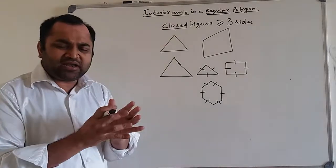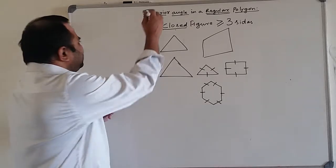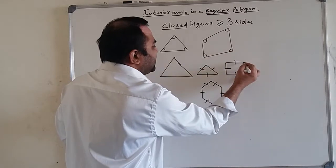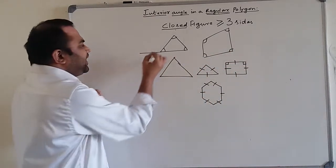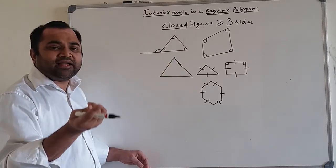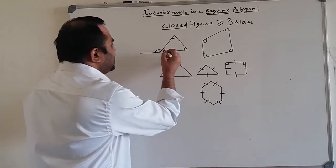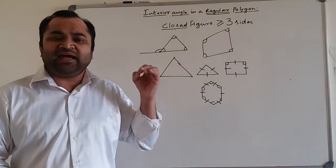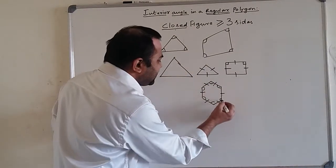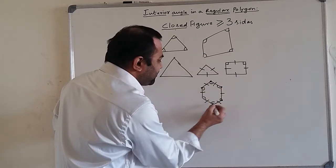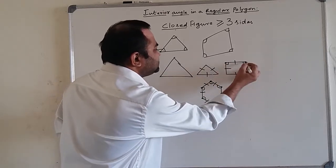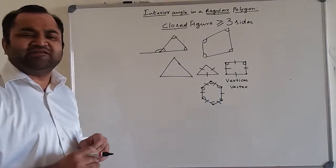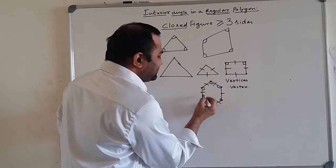Now, what is an interior angle? Interior angles are angles formed at the vertices of the figure from the inside. If you extend a side, an exterior angle is formed outside the figure. In a regular polygon, the vertices are the points at which any two sides meet. The angles formed at all the vertices in a regular polygon will have equal measure.